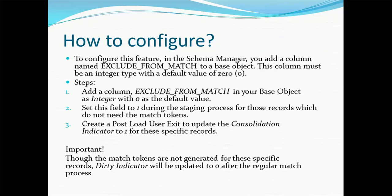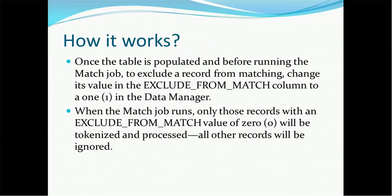There are several steps: first, add the EXCLUDE_FROM_MATCH column in the base object with integer type and a default value of 0. Then set the field to 1 during the staging process, or use the Data Manager to set it to 1. Optionally, write a post-load user exit to update the consolidation indicator to 1 for specific records. Note that match tokens are not generated for these records, but the dirty indicator will be updated to 0 after the regular match process.